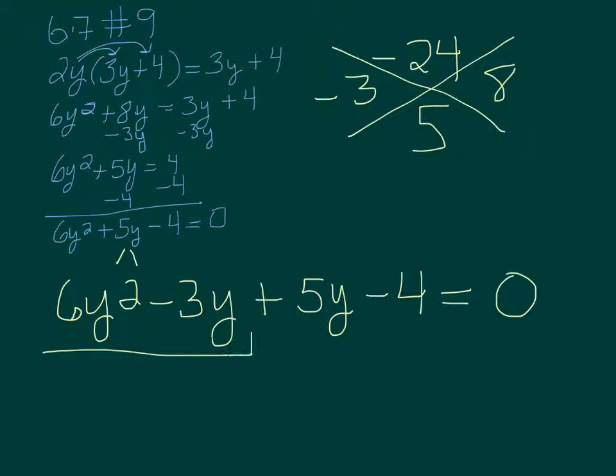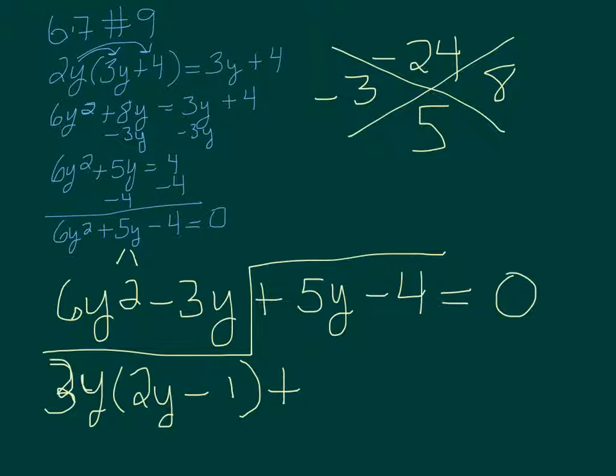Now factor it by grouping. In the first two terms, I can take out 3y, and I'm left with 2y minus 1. In the second two, I can't take anything out except for a 1. Oh, this should be an 8, not a 5.